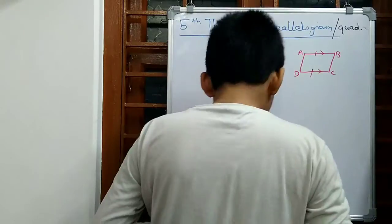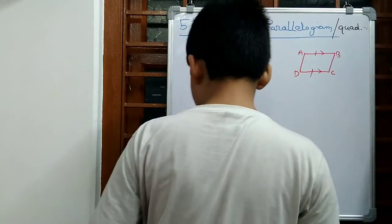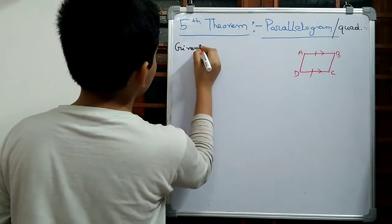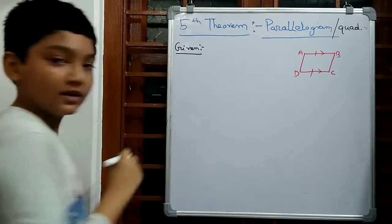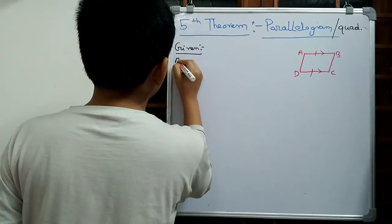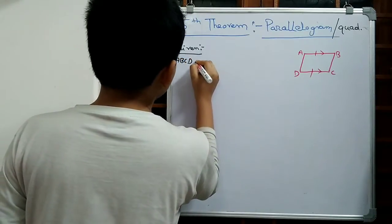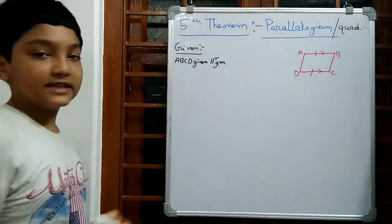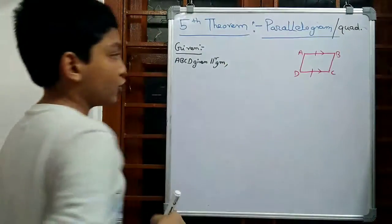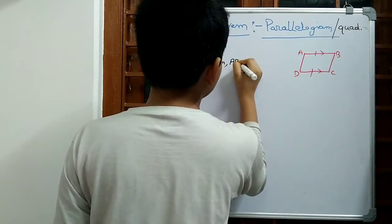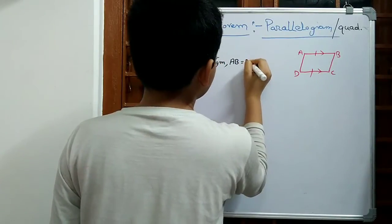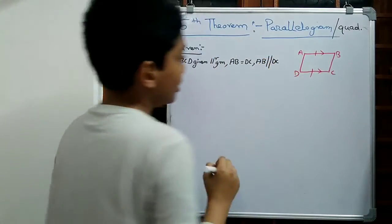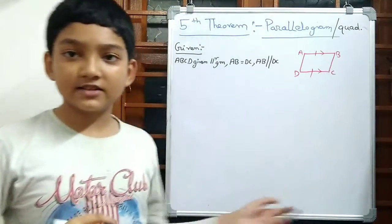So in the given section we can write: given ABCD is a parallelogram, AB equals DC, and AB is parallel to DC. This is what is given.